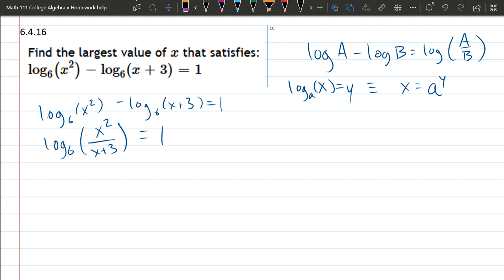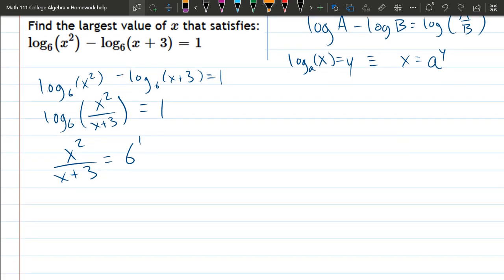We just used this first property. Now we're ready to use the second property, the definition of moving the base to the other side. So we're just left with the inside: x squared over x plus 3 equals the base is 6, the exponent is 1. Of course, 6 to the first power is 6.